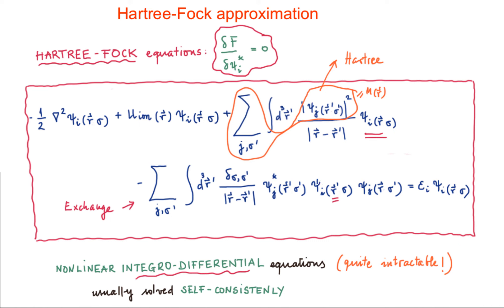Once we have described the Hartree-Fock approximation in the general context — which can be applied to any system, even to molecules — the next step is going to be to apply it to the system we are analyzing, which is the uniform electron gas.